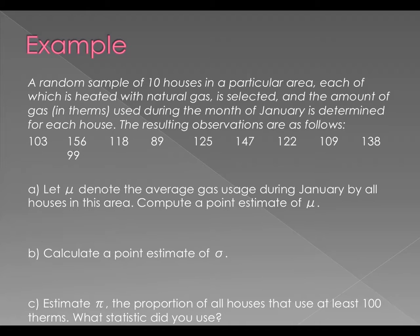Okay. Next. A random sample of 10 households in a particular area, each of which is heated with natural gas, is selected and the amount of gas in therms used during the month of January is determined for each house. The resulting observations are as follows. Okay. Every year, students have difficulty with this type of problem and I don't really know why. So hopefully, you guys are going to impress me.